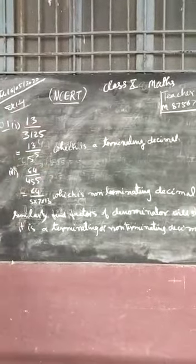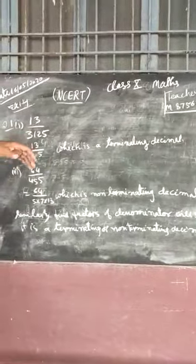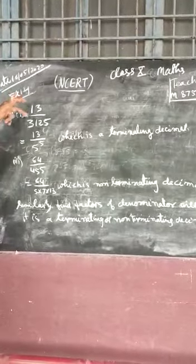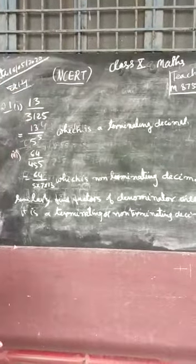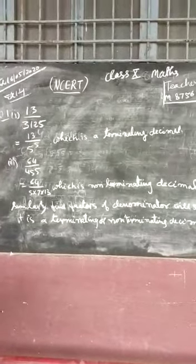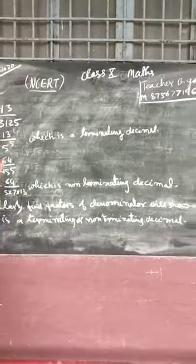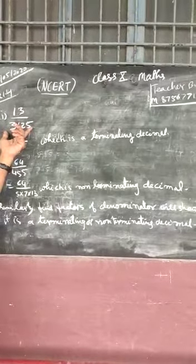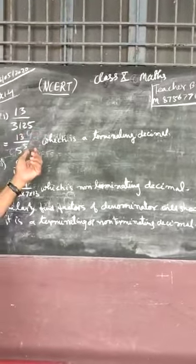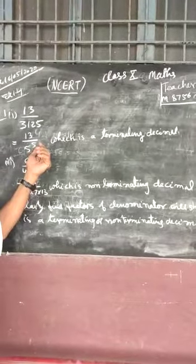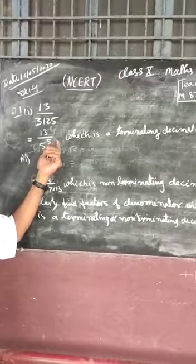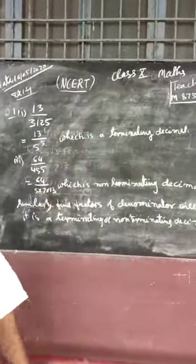Exercise 1.4, Question 1: to find whether 13 upon 3125 will be a terminating or non-terminating decimal. By factoring the denominator 3125, it becomes 13 upon 5 to the power 5. Because the denominator has factors of 5 only, it will be a terminating decimal.